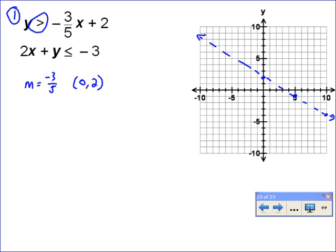And then we look at the second line and we have two-x plus y is less than or equal to negative three. So subtract two-x. We have y is less than or equal to negative two-x minus three.